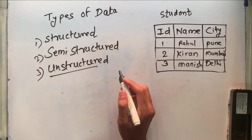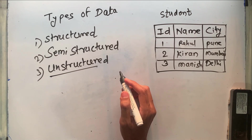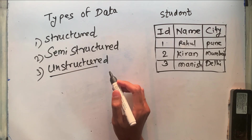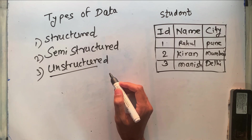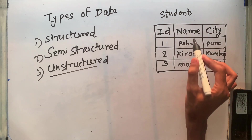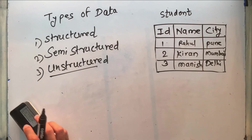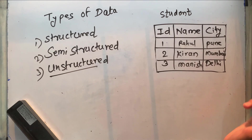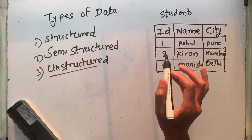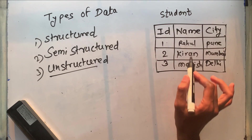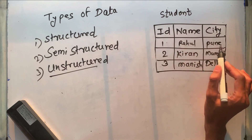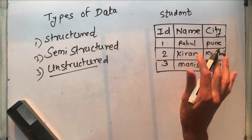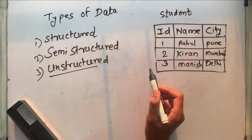Structured data means the data is stored in a tabular format, with each row and column contributing to a specific structure. Structured data is schema-dependent and it is a little difficult to scale for large databases. It is also known as schema-dependent data. For example, a student table has columns like ID, name, and city — a fixed tabular structure.